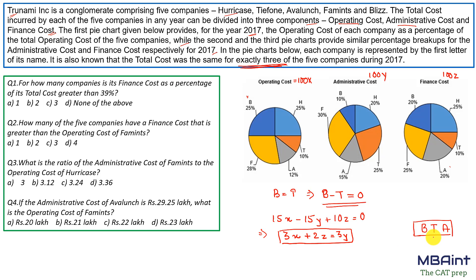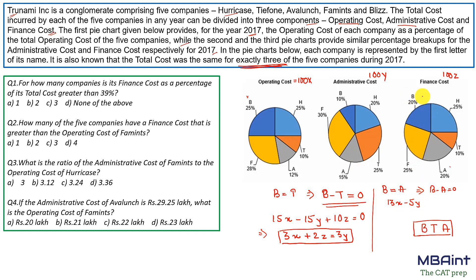From our first equation we have one relation. Now equating B and A: B − A = 0. For operating cost: 25x − 12x = 13x. For administrative cost: 10y − 15y = −5y. For finance cost: 20z − 20z = 0. This directly gives us 13x = 5y — a clean relation between x and y.